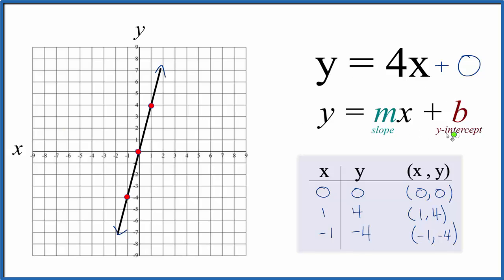So if b is zero our y-intercept is zero, we go to the y-axis and we find zero, that's where our line should cross and there it is, so that's our y-intercept. For the slope we have four but it's helpful to think of this as four over one.